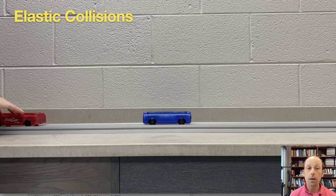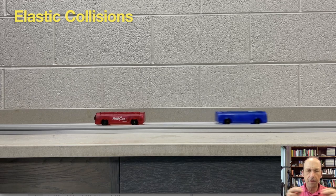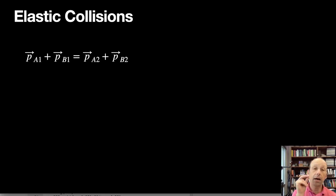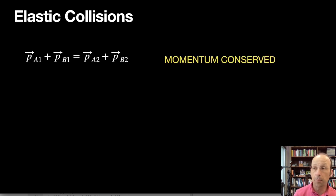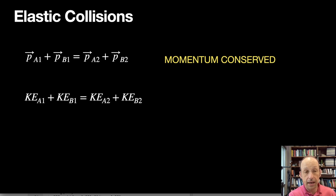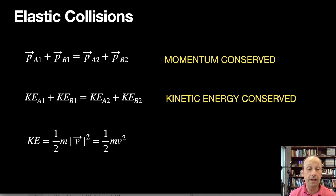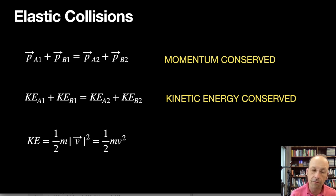Let's use this in an elastic collision between two carts of equal mass. They have a magnetic bumper between them, so they effectively interact. Conservation of momentum gives us PA1 plus PB1 equals PA2 plus PB2. For an elastic collision, we also have conservation of kinetic energy: the kinetic energy of A before plus B before equals kinetic energy of A after plus B after. We define kinetic energy as one-half MV squared. V is technically a vector — we use its magnitude squared.